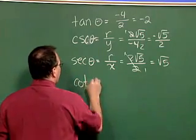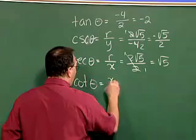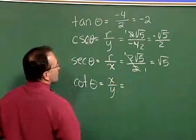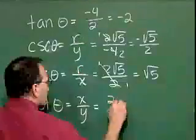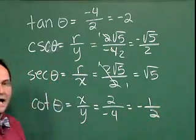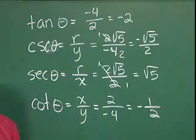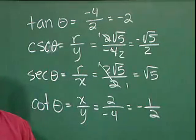And finally, the cotangent of theta is defined to be x over y, so that would be equal to 2 over negative 4, which is negative 1 half. And there we have the six trigonometric functions for that particular angle.